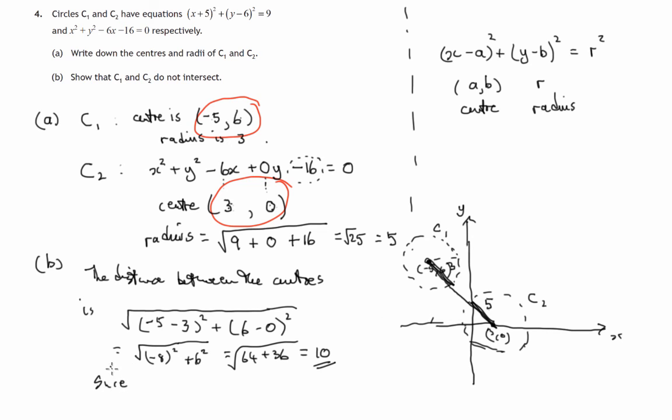Since 10 is greater than the sum of the radii, which we know was three plus five, then the two circles C₁ and C₂ do not intersect.